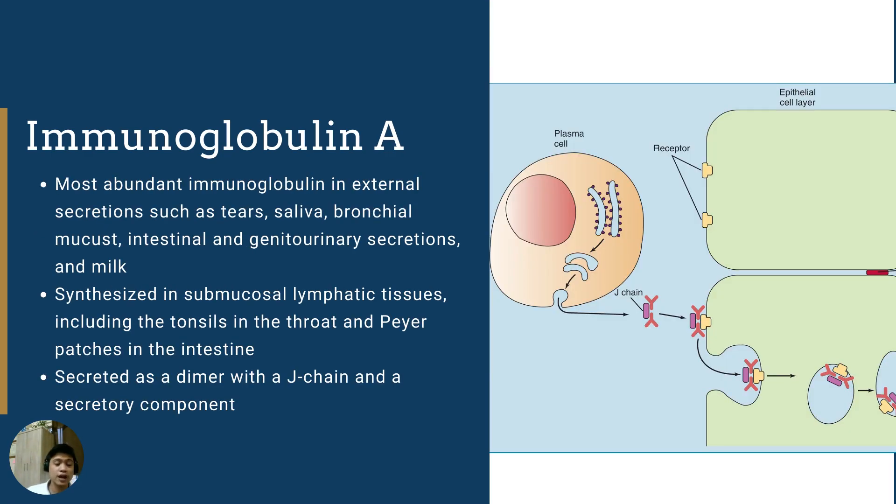The next type of antibody is immunoglobulin A. It is the most abundant immunoglobulin in external secretions, such as the tears, saliva, bronchial mucus, intestinal and genitourinary secretions, and milk. It is synthesized in the submucosal lymphatic tissue, including the tonsils in the throat and Peyer patches in the intestine.